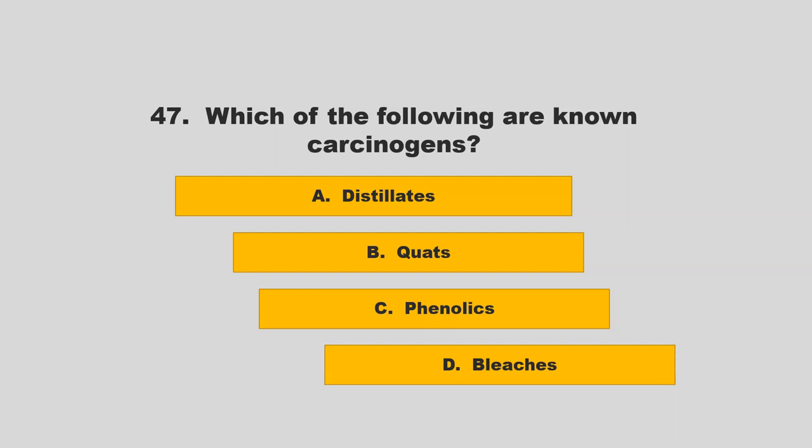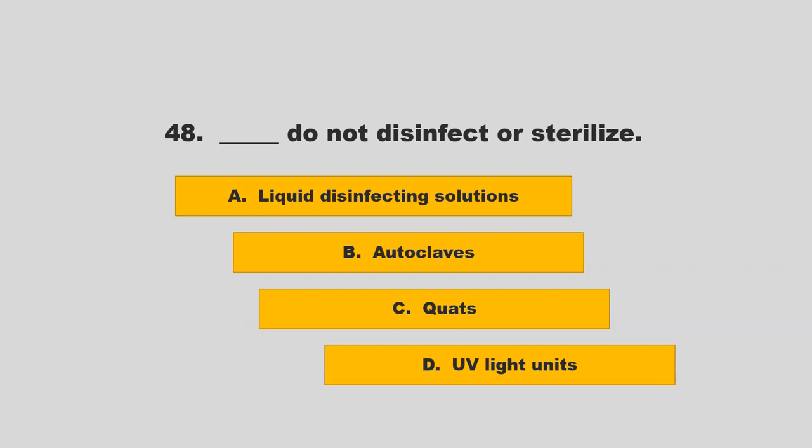Which of the following are known carcinogens? Options: distillates, quats, phenolics, or bleaches. The correct answer is C: phenolics.